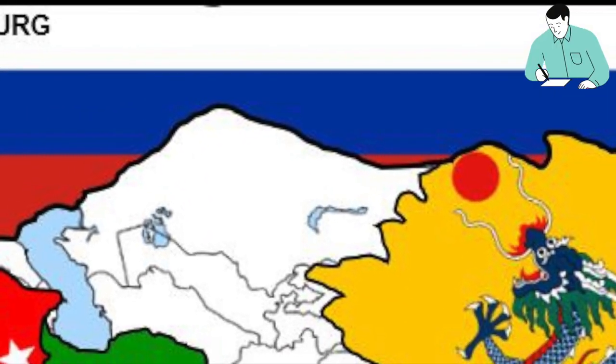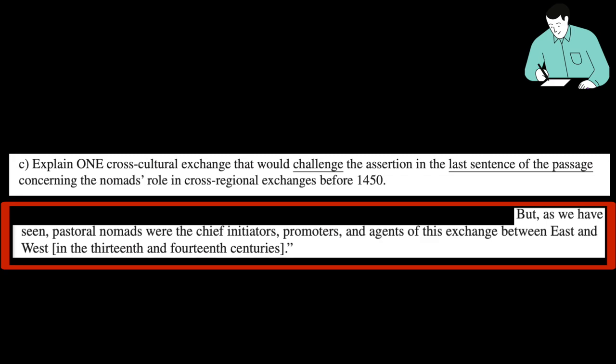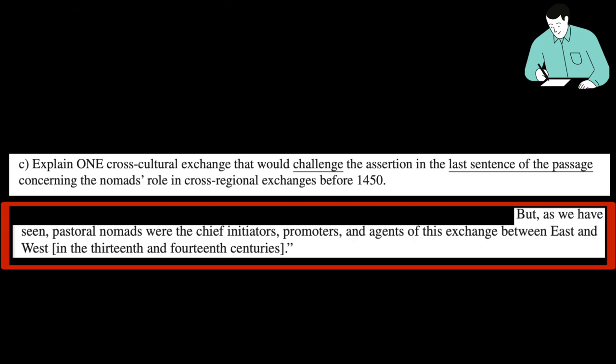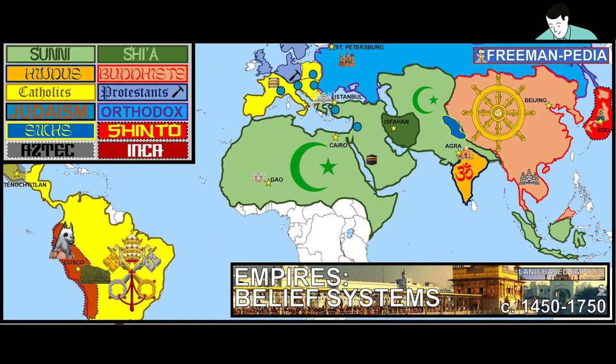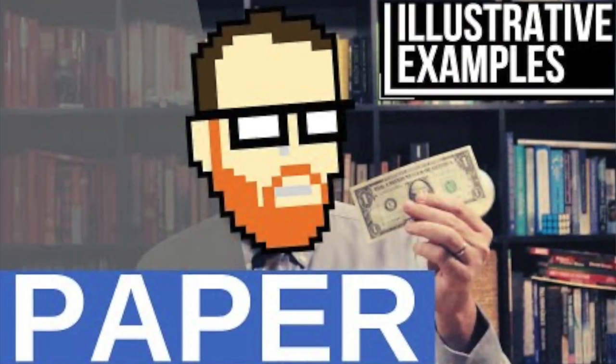Plus, Central Asian nomads themselves are falling under the rule of larger and larger empires. Two of the biggest empires in history show up in unit three: Russia and the Manchu Qing dynasty in China. The days of the big scary Mongol types are really over — you're under the rule of one of these empires. For letter C, the last sentence says pastoral nomads were the chief initiators and agents of exchange between East and West. So explain a cross-cultural exchange that challenges this — something the pastoral nomads weren't the primary agents of. You could talk about missionaries of Buddhism, Christianity, or merchants of Islam and Christianity that spread religions around. Or paper-making, which spread from China without the nomadic peoples being the chief agents of change.